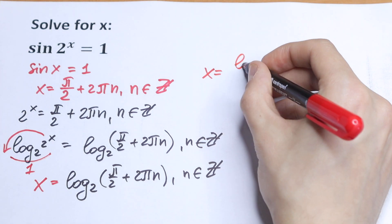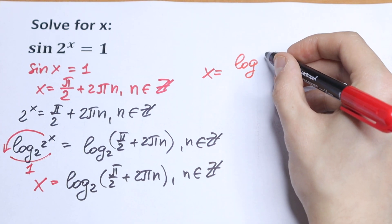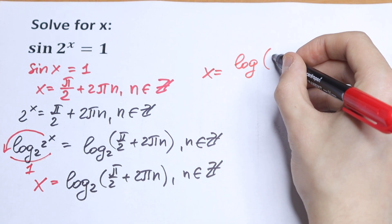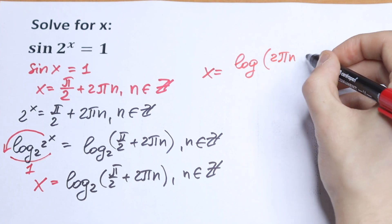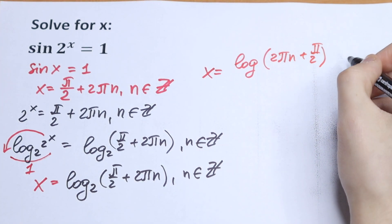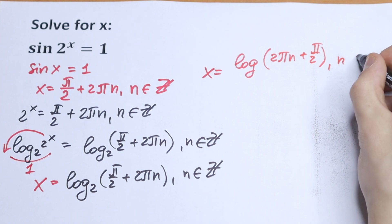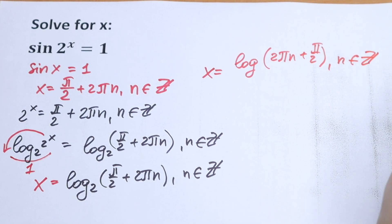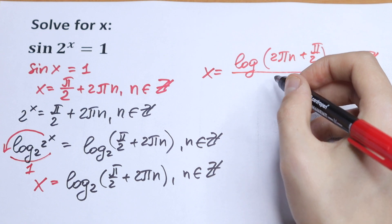So as a result, we will have in our numerator log(2πn + π/2), n ∈ Z, over log 2.